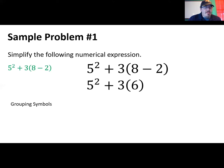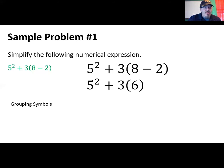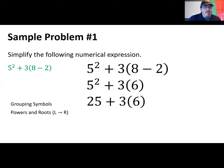The first step is grouping symbols, and we do have parentheses in this problem. Whatever operation is inside the parentheses, we take care of that first — so we do eight minus two, which gives us six. When we rewrite the expression, we now have five to the second plus three times six. Remember that parentheses also imply multiplication, so the three and the six will be multiplied together. But before multiplication, we take care of exponents — five to the second power is five times five, or 25.